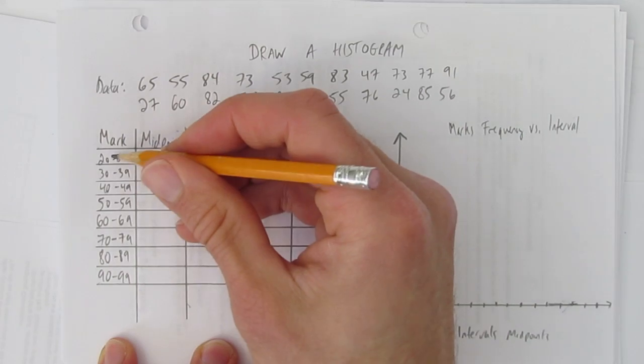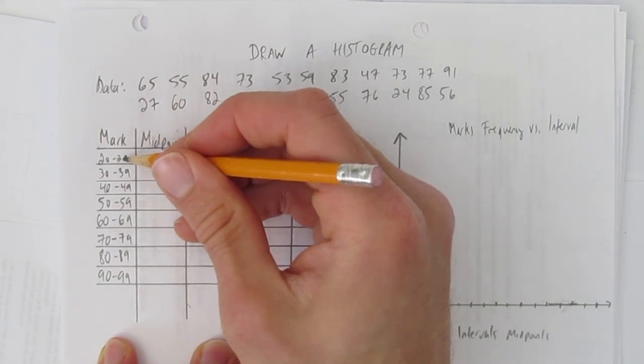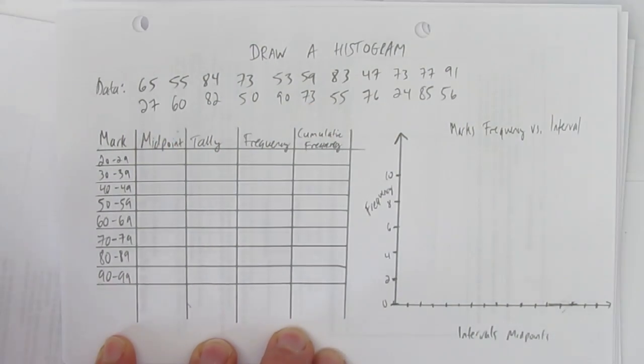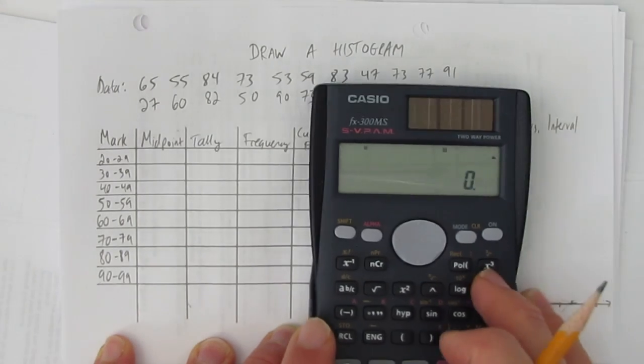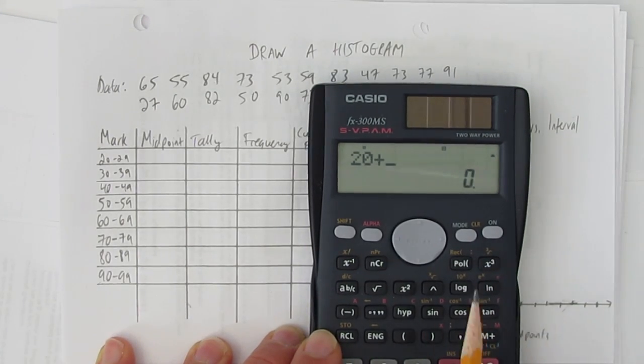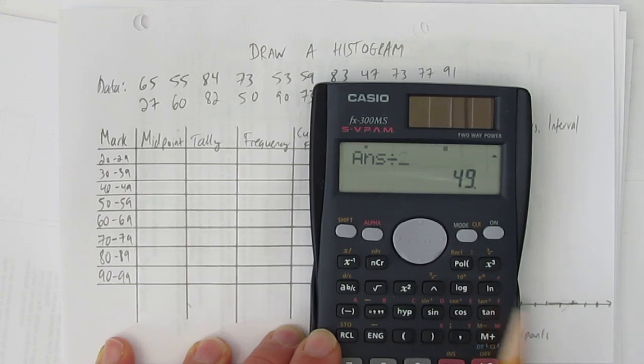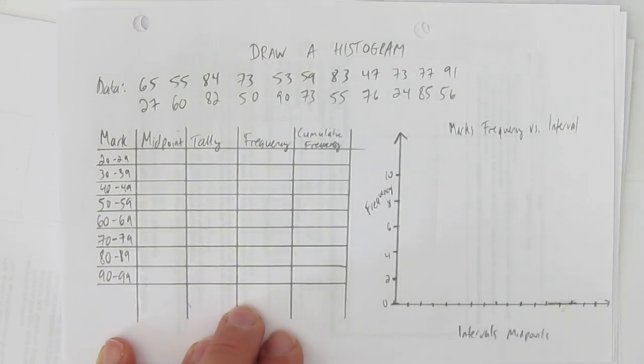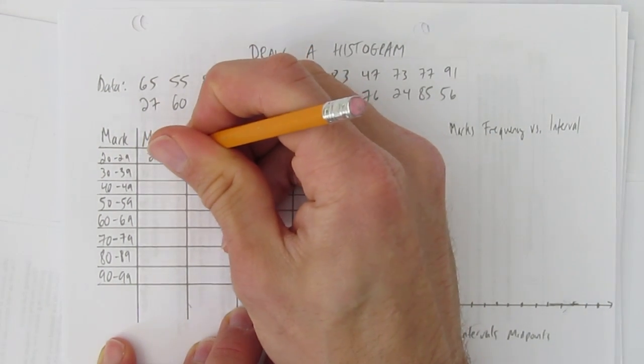To find the midpoint of intervals, you add them together and divide by two. So you can try that on your calculator, if that's something you need, no problem. And divide by two, and you get 24.5. You might be able to see that without a calculator, too.